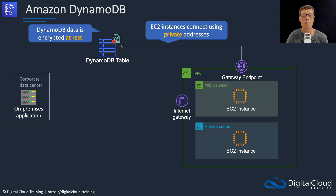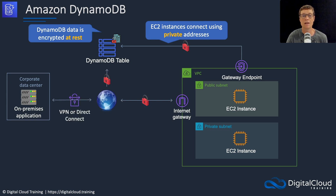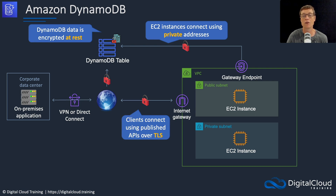You might also want to connect from your corporate data center. In that case, you can either connect over the internet with SSL/TLS connections, or you can connect using a VPN or Direct Connect to AWS. From there you might use a gateway endpoint to go across to your DynamoDB table.